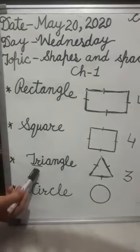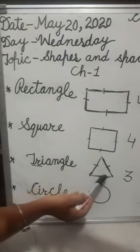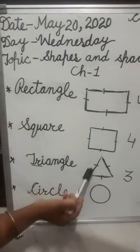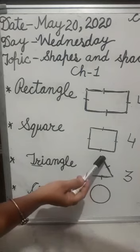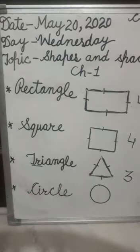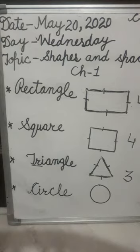Number three: Triangle shape. Try means three. This is triangle shape. It has three sides — one side, two side, three sides — and three corners — one corner, two corner, three corner. Example of triangle: Samosa — it is triangle in shape. और pizza slice भी it is also in triangle shape. Sandwich is also in triangle shape.